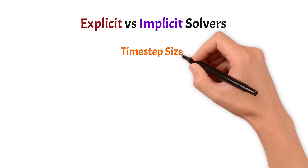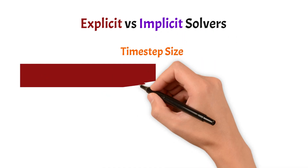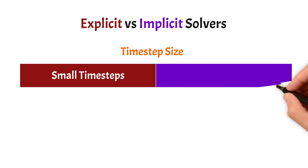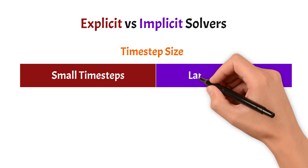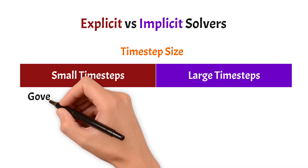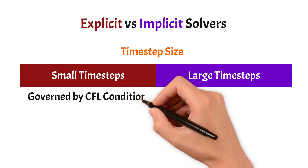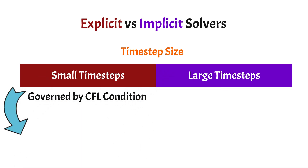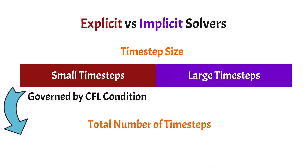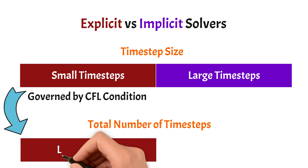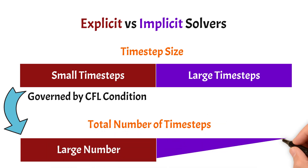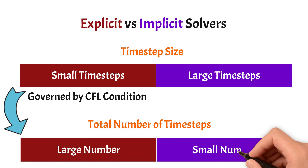Explicit solvers require small time steps governed by the CFL condition, whereas implicit solvers require large time steps. That means, for the same problem with the same simulation time, you will need a much larger number of time steps for an explicit solver compared to a smaller number of time steps for an implicit solver.